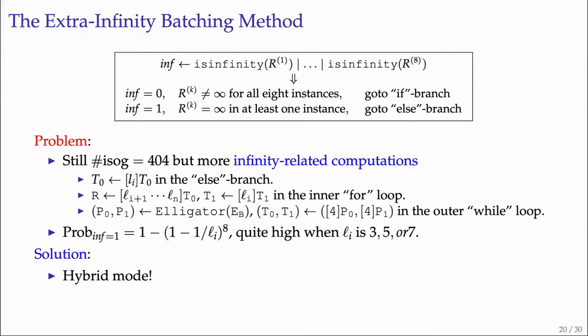The probability of this variable equaling 1 is quite high when Li is small, for example 3, 5, or 7. As a result, an increased number of infinity-related computations is expected, affecting efficiency of the extra-infinity method. We mitigate this problem by considering the hybrid mode again.